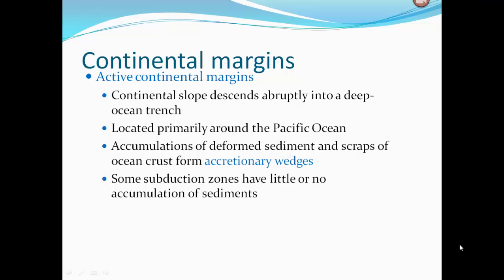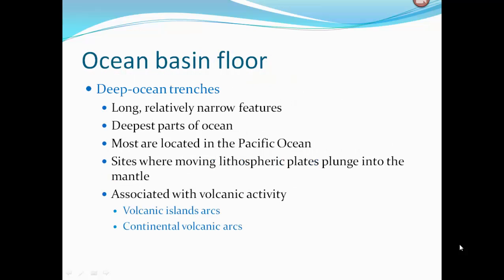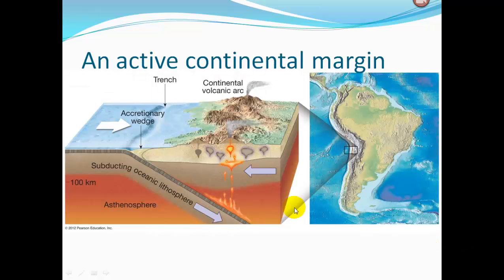Active continental margins occur where there is a plate boundary, located primarily around the Pacific Ocean. The continental slope descends abruptly into a deep ocean trench. Accumulations of deformed sediment and scraps of ocean crust form accretionary wedges. Some subduction zones have little or no sediment accumulation. Deep ocean trenches are long, relatively narrow features — the deepest parts of the ocean, mostly in the Pacific. They are sites where moving lithospheric plates plunge into the mantle, associated with volcanic activity, forming volcanic island arcs and continental volcanic arcs. Here an ocean plate subducts under a continental plate, forming a deep ocean trench with an accretionary wedge of deformed sediments.